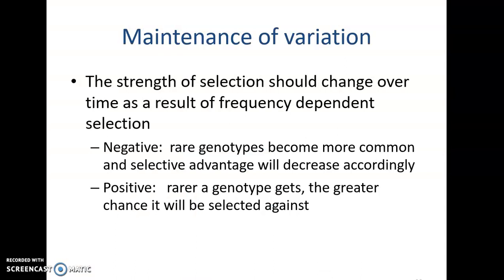With frequency-dependent selection, the strength of selection changes over time as frequency changes. With negative frequency-dependent selection, rare genotypes become more and more common, and as they become more common, that selective advantage will decrease accordingly — so they may become rare again. With positive frequency-dependent selection, the rarer a genotype gets, the greater the chance it will be selected against. A change in frequency leads to a change in fitness.